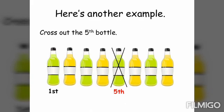Another example: cross out the fifth barrel. Since it was not stated whether to start from left or right, we automatically start from the left — that is the normal default. So we count: first, second, third, fourth, fifth barrel — and we cross it out.